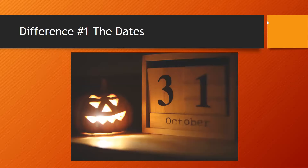The first difference is the dates. Halloween is on October 31st. It is a one-day thing that exists pretty much at dusk when little kids go out and go trick-or-treating. However, Dia de Muertos, Day of the Dead, is from October 31st up until November 2nd, so it's a three-day festivity.